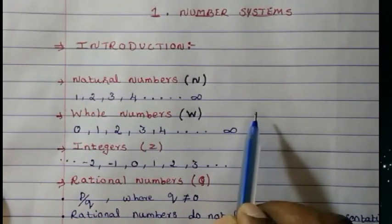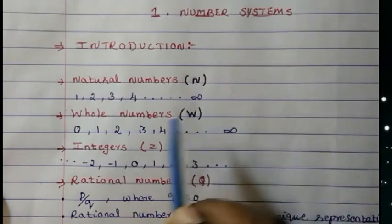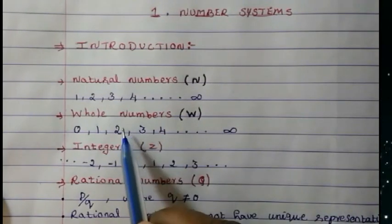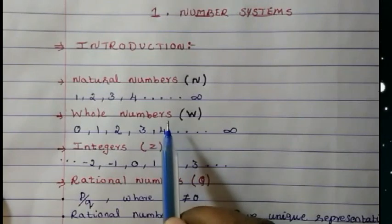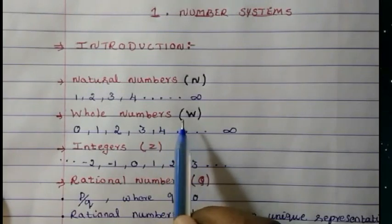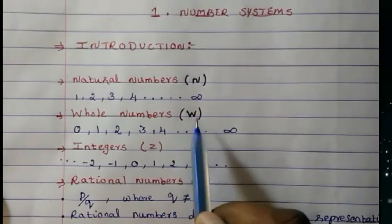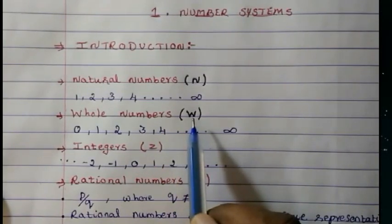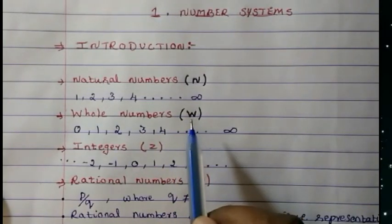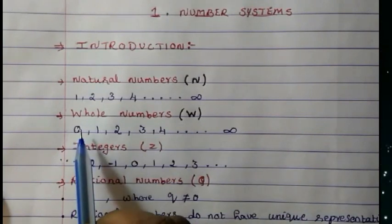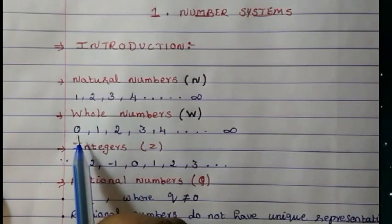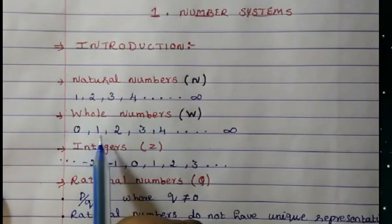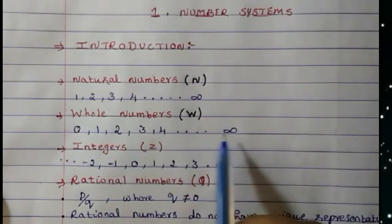Second comes whole numbers. Whole numbers are denoted by W, and whole numbers start from 0 and then continue — it is also infinite.